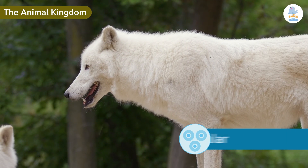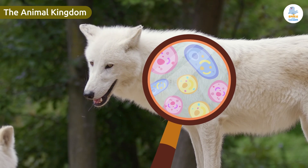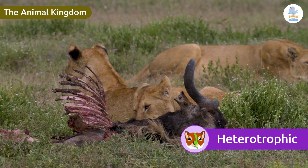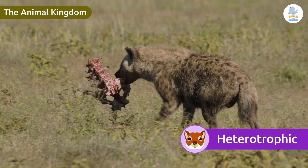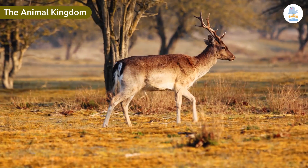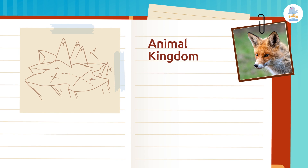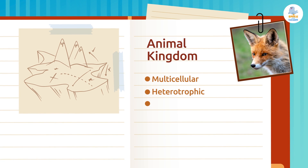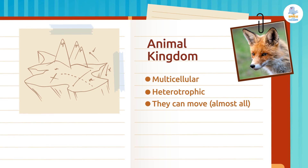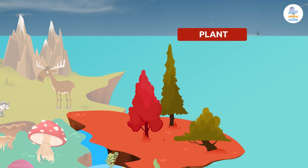Let's look at some characteristics of the animal kingdom. Animals are multicellular, which means they're made up of more than one cell. All animals are heterotrophic, which means they eat other organisms to get the substances they need to survive. Another important characteristic is that almost all of them can move on their own. So the characteristics of the animal kingdom are: multicellular, heterotrophic, and most can move on their own.